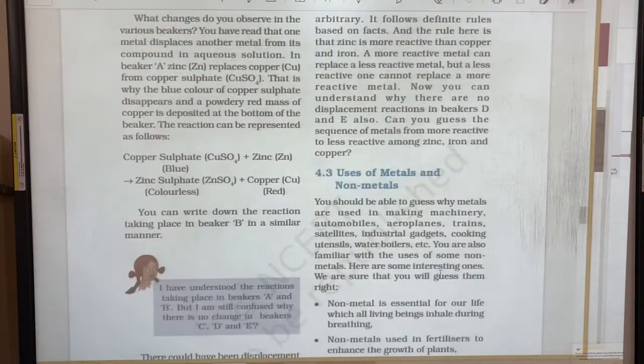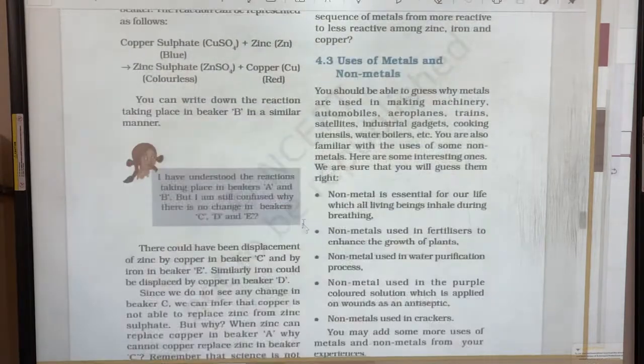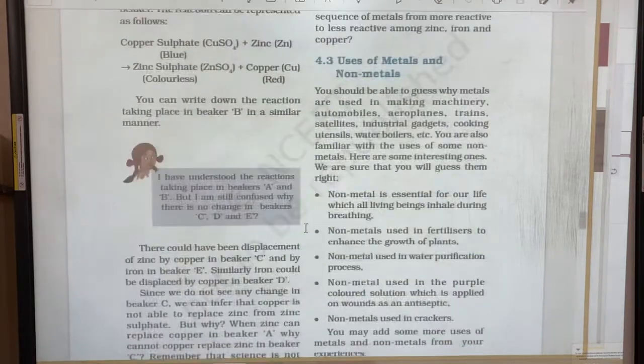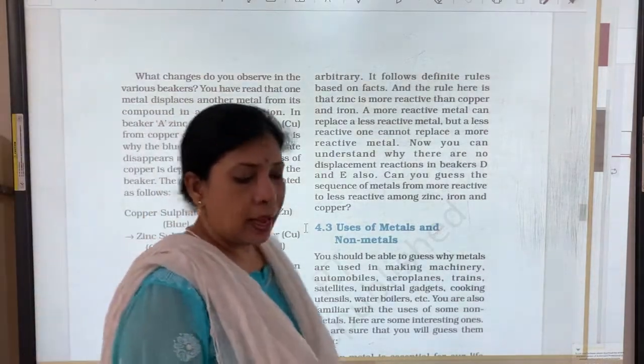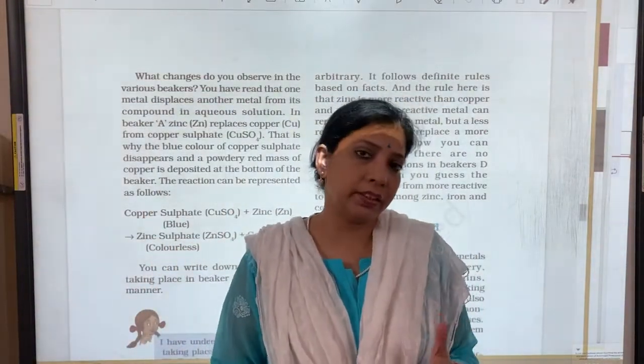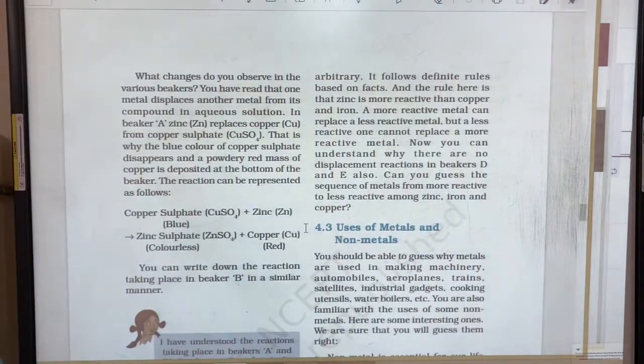Let us move. So this is what is explained here. There is an equation also. Copper sulphate plus zinc, we got zinc sulphate colourless and copper is that red substance which is deposited at the bottom of the beaker. In the beaker number C, D, E there is no change because copper and iron they are less reactive than zinc and hence they could not displace it. So I am sure this is clear to you all.